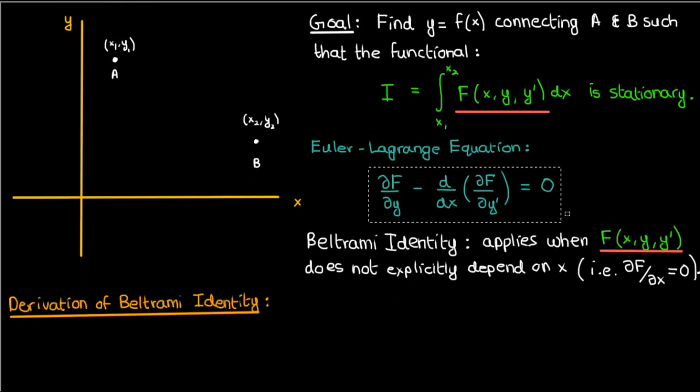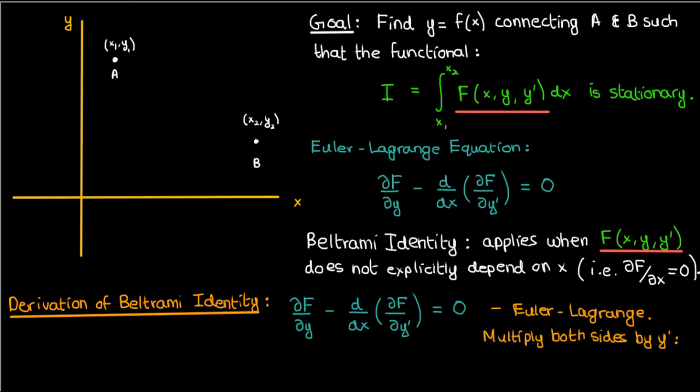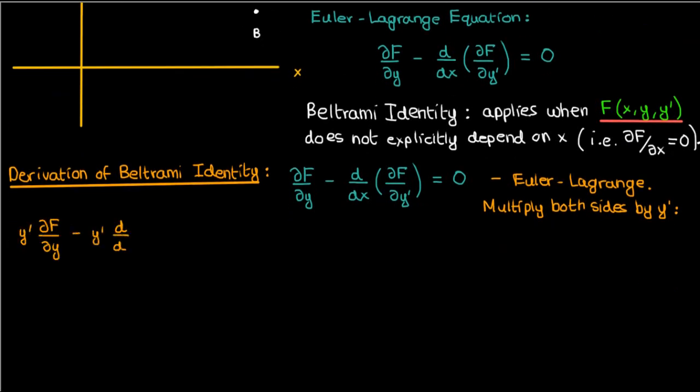I'm going to just copy-paste the Euler-Lagrange equation for our quick reference here. The first thing in this derivation that I'm going to do is multiply both sides of Euler-Lagrange by y prime. The resulting equation I'll call equation 1.